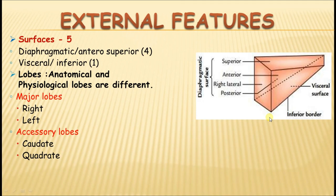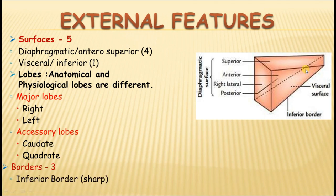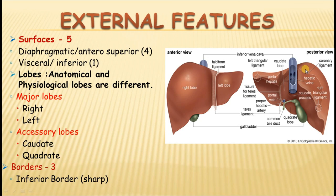In summary: the diaphragmatic surface is divided into anterior, superior, posterior, and right lateral surfaces; then you have the inferior or visceral surface. There are three borders: the sharp inferior border, and the other borders are ill-defined — the superior border, the posterior superior border, and the posterior inferior border. There is no clear demarcation between the anterior, superior, and right lateral surfaces; they are all continuous with each other.